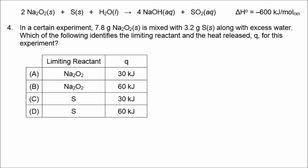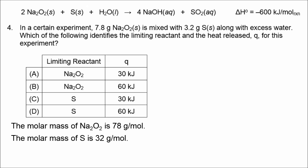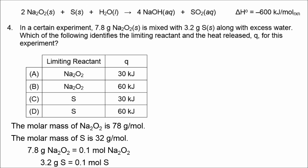In number 4, we have a reaction between sodium peroxide (Na2O2), with a molar mass of 78 grams per mole, and sulfur, with a molar mass of 32 grams per mole, with excess water. We have 7.8 grams of sodium peroxide, which is 0.1 mol, and 3.2 grams of sulfur, which is also 0.1 mol.